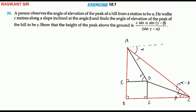अब इसमें देखिए — यहाँ से यहाँ तक angle की बात करें तो यह gamma form होगा, यह भी gamma हो जाएगा। तो अंदर वाला angle gamma minus alpha हो जाएगा। यहाँ पर CD जो distance है वो c meter है। बाकी कुछ दिया नहीं है, हमें a और b को निकालकर add करना होगा तो हमारा काम बन जाएगा।